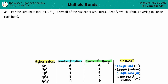Number 24. For the carbonate ion, which is CO3 2-, draw all of the resonance structures and then identify which orbitals overlap to create each bond. So, carbonate ion CO3 2-, we have to draw all the resonance structures, and the resonance structures come from your Lewis structure.